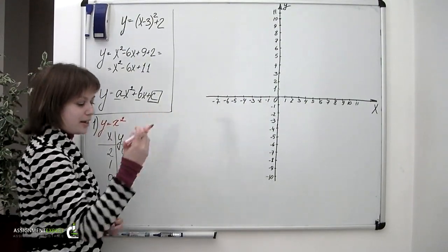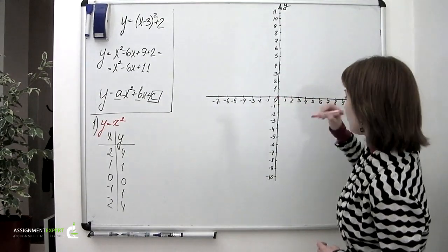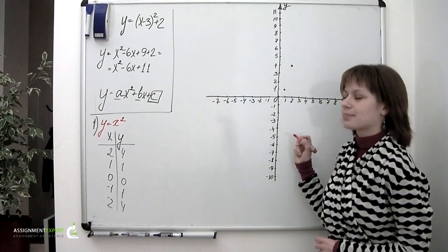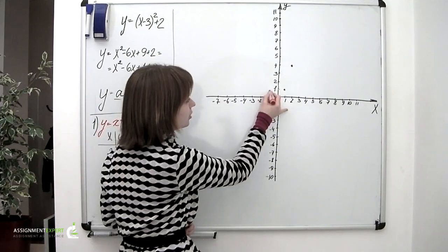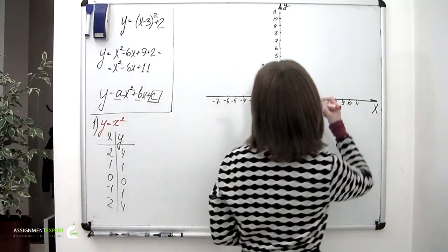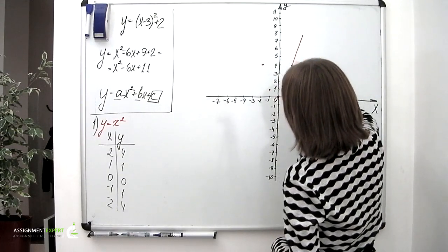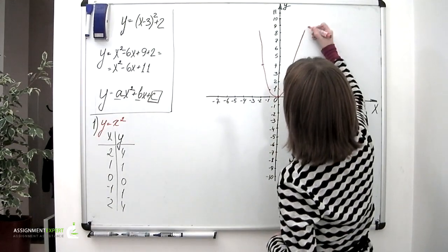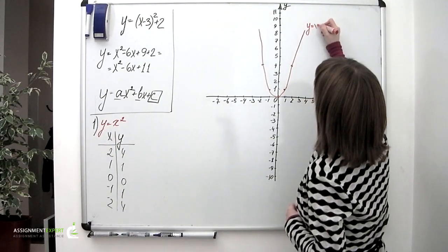Let's mark these points on a coordinate plane and connect them. We have points (2, 4), (1, 1), (0, 0) — this is the right branch of the parabola — and the left branch goes symmetrically with points (-1, 1) and (-2, 4). Connecting them gives us our first parabola, described by y equals x squared.